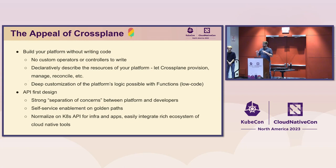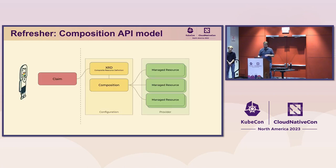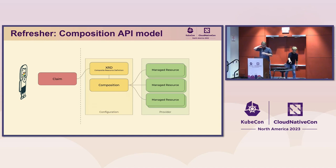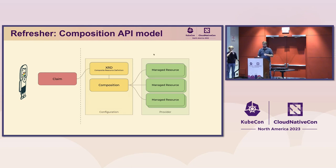With API-first design, everyone is speaking the same language, which means integration with the rest of the Kubernetes ecosystem is really nice. We take a consistent approach with applications and infrastructure, with similar experiences like label matching across those. The composition model lets a developer create a simple claim for some infrastructure resource.